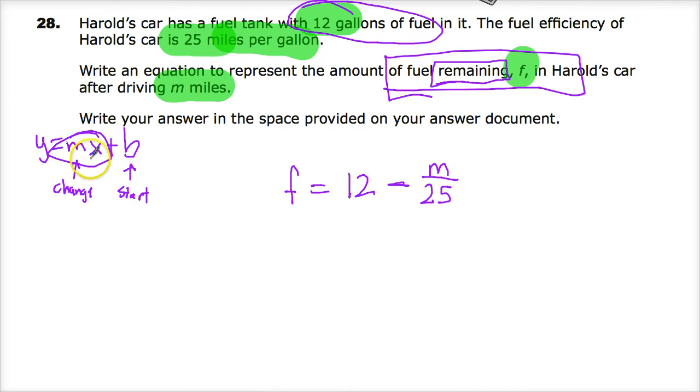This is supposed to be times. If I did 1/25 times M, it would look like this. But to me, it's a division idea - I'm dividing the miles by 25 to figure out how many gallons I'm losing. So that's number 28. A bit of a weird look at what seems simple, but it's not super difficult if you take your time.